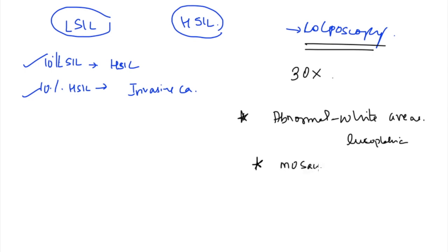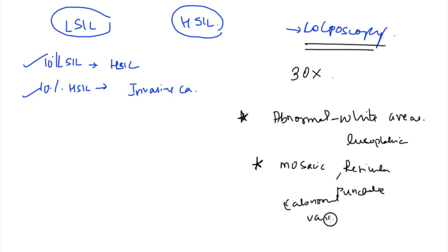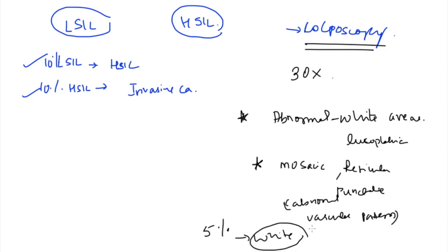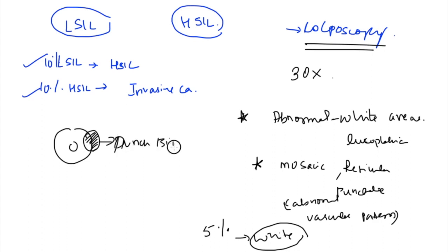Areas of abnormal vascularity - mosaic, reticular, or punctate patterns - indicate abnormal vessels. Biopsy is taken from these areas. If nothing visible is seen, apply 5% acetic acid, and take samples from areas that turn white (acetowhite areas). If there is a visible growth on the cervix, simply take a punch biopsy directly from the growth.